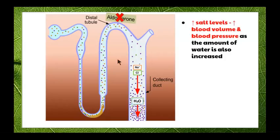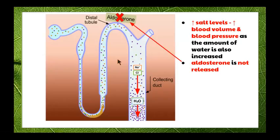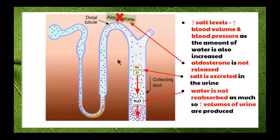When we have increased levels of salt in the blood, blood volume and blood pressure both increase as water levels also rise. At this point, aldosterone is not released. As a result, salt is excreted in the urine along with water, water is not reabsorbed as much, and there are increased volumes of urine produced.